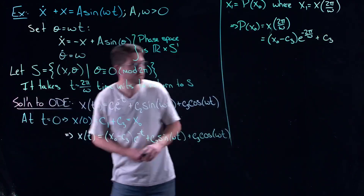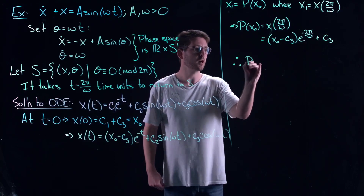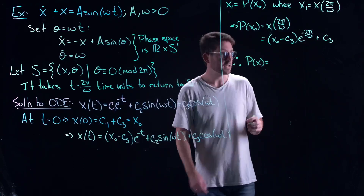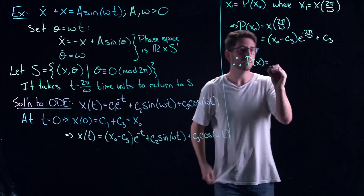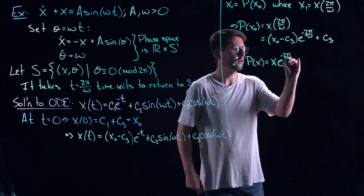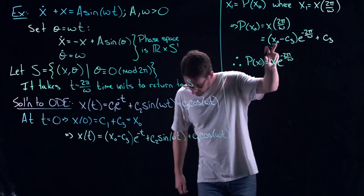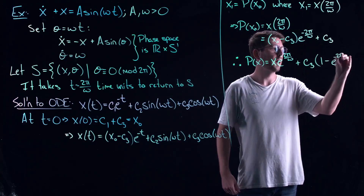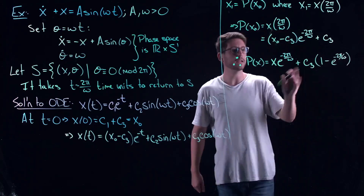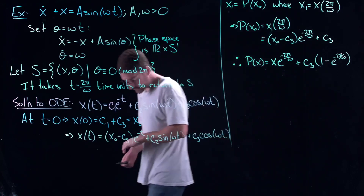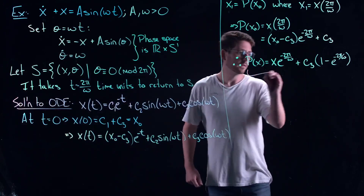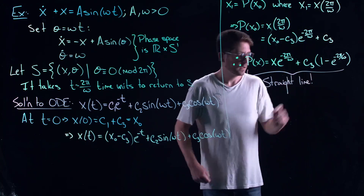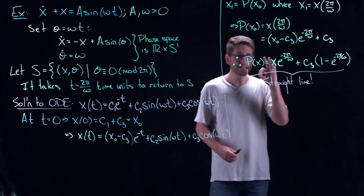So my Poincaré mapping — or stroboscopic mapping — when opened up and like terms collected, gives: P(X0) = X0·e^(−2π/ω) + C3·(1 − e^(−2π/ω)). This is a straight line in X0, with C3·(1 − e^(−2π/ω)) as a constant. That's not very interesting by itself, but in particular it has exactly one fixed point.